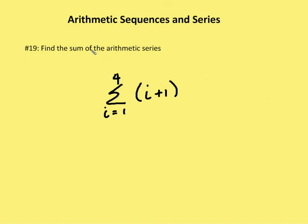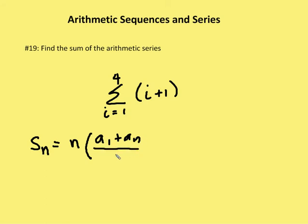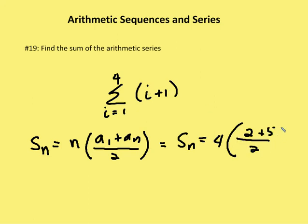Two more problems, and they're both similar. The first is to find the sum of the arithmetic series with i going from one to four with a rule of i plus one. We recall that our series formula is: sum of n terms equals the number of terms times the first term plus the last term, all over two — that's just the average times the number of terms. The number of terms is four. Plugging in i equals one gives a first term of two, and i equals four gives a last term of five. So s sub n equals four times two plus five over two, which is four times three and a half, equal to 14.